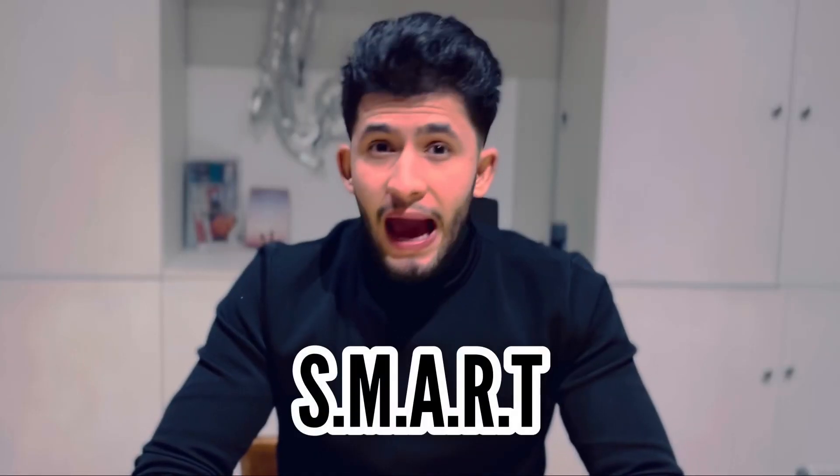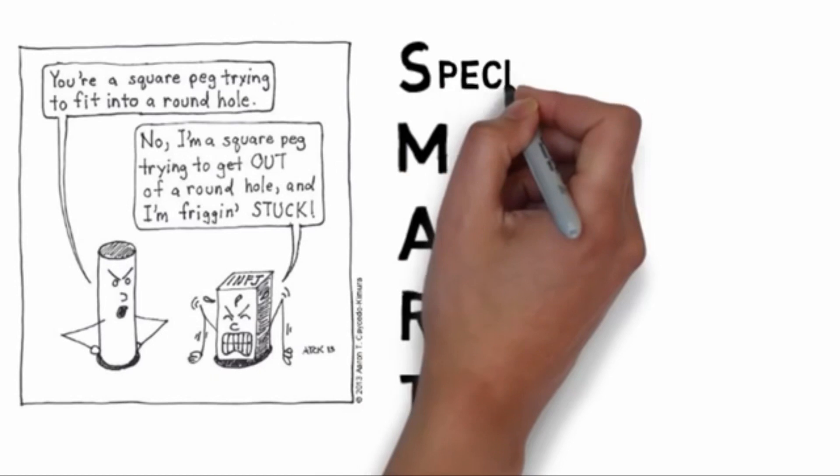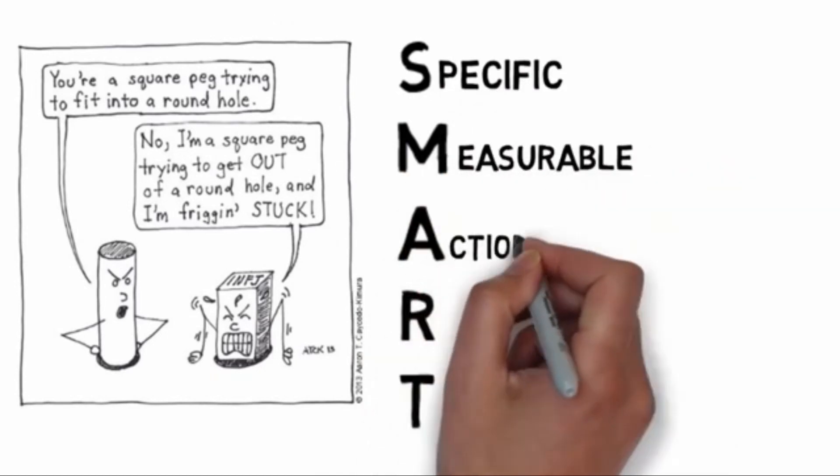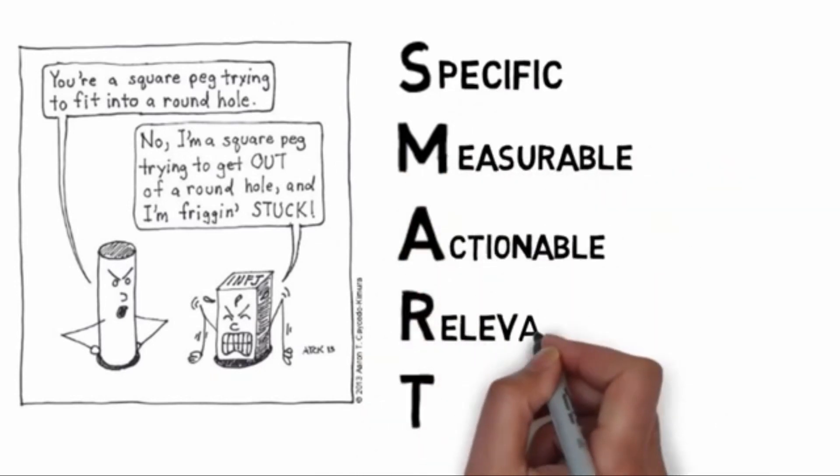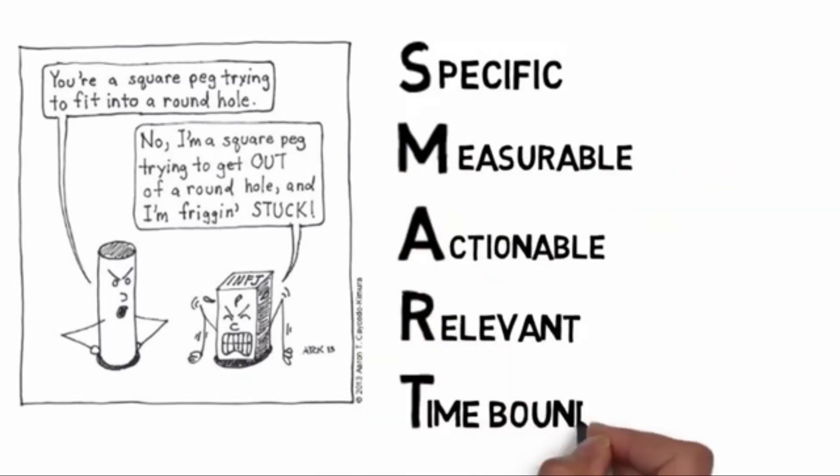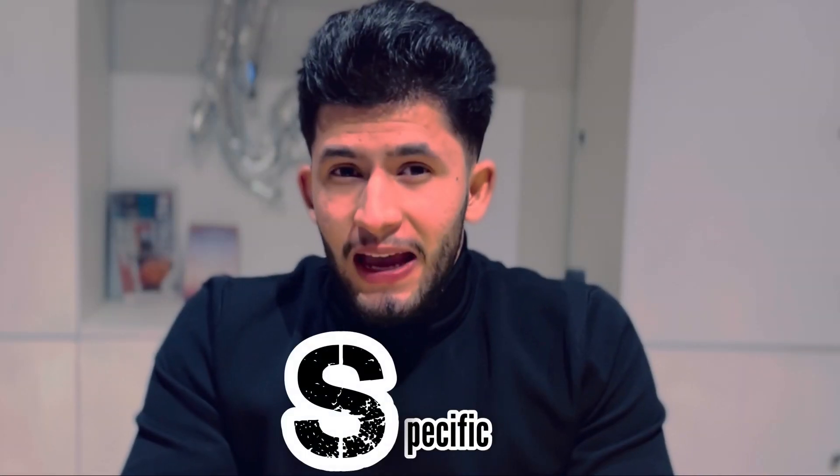SMART is an acronym that stands for Specific, Measurable, Actionable, Relevant, and Time-bound. Goals that are specific have a significantly greater chance of being accomplished. In order to make a goal specific, you need to ask these five questions.